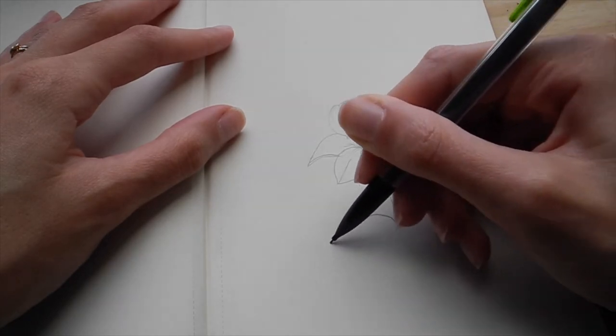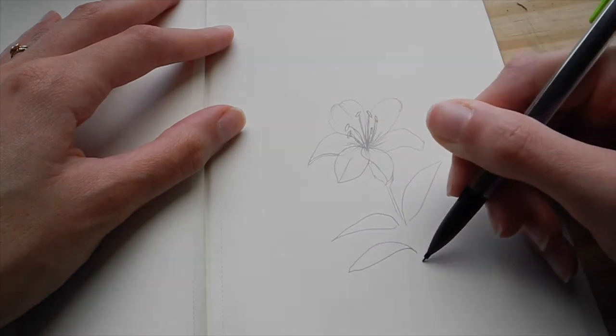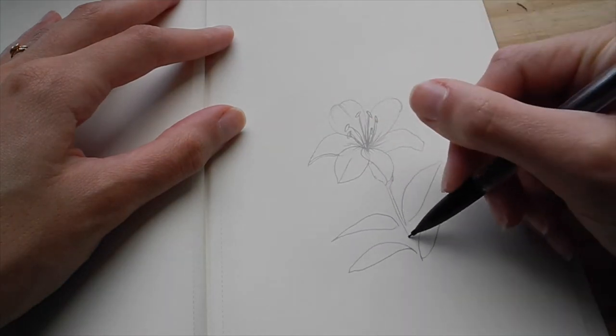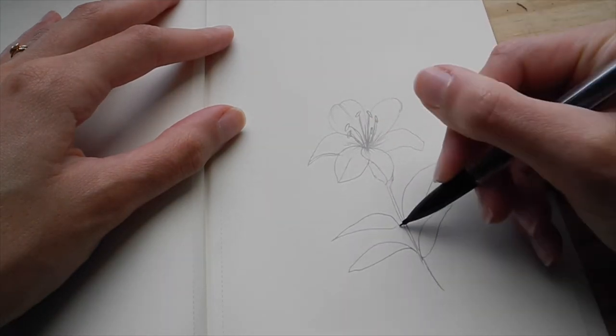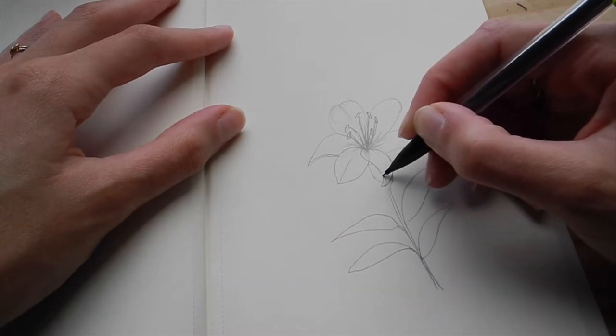And then it has like this little bulb underneath in the back. So I made sure to represent that. And then here are the leaves, really simple leaves. They grow in pairs, I'm pretty sure. So I'm just making some final choices about that.